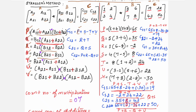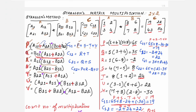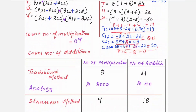How many additions are performed in Strassen's method? Counting: 1, 2, 3, 4. Subtractions are also included under additions since subtraction is addition of negative numbers. Continuing: 5, 6, 7, 8, 9, 10, 11, 12, 13, 14, 15, 16, 17, 18. Totally, 18 additions in this method.